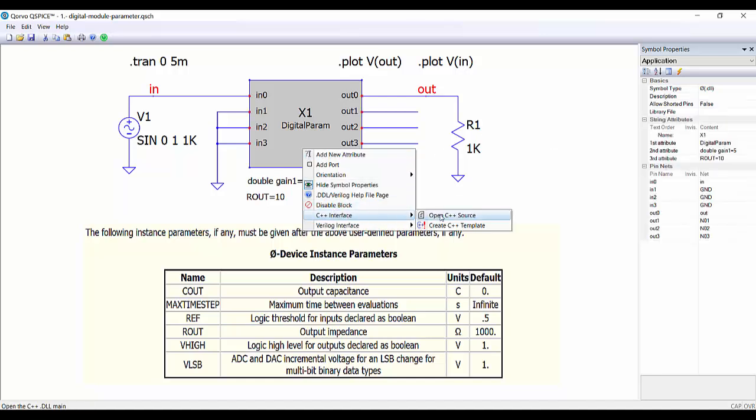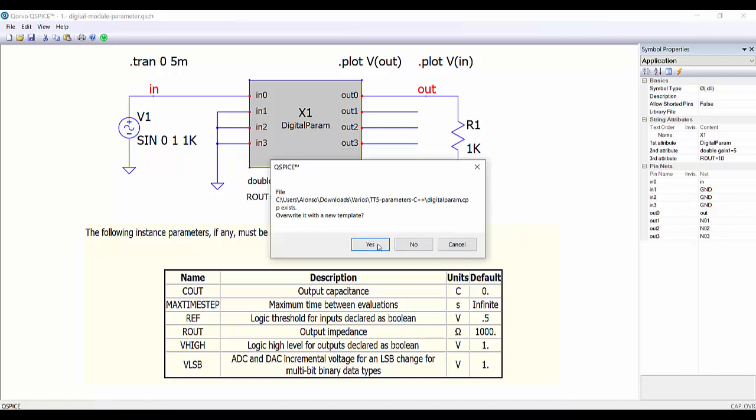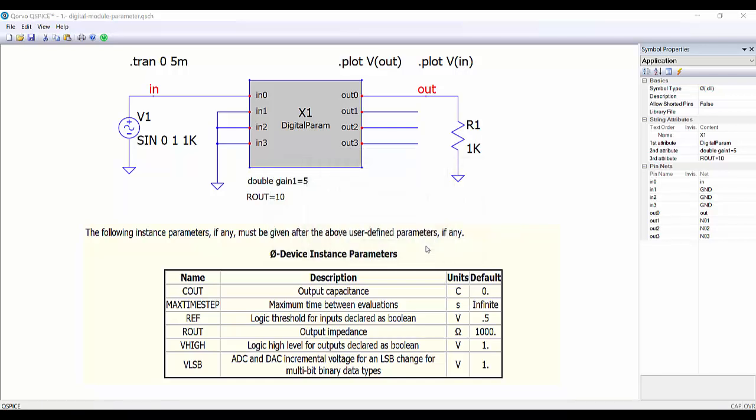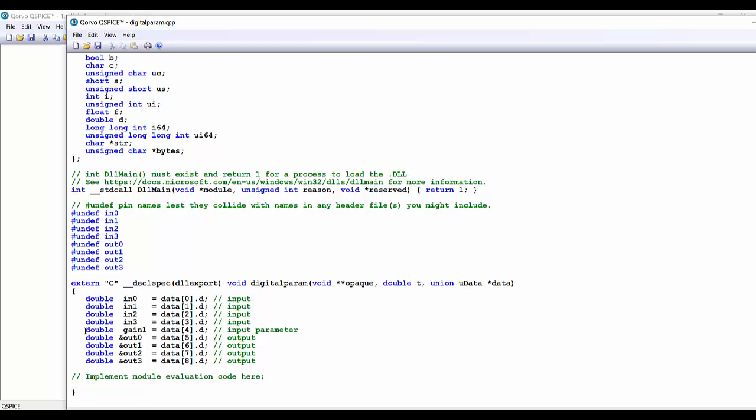Here, so we say yes, okay. And we can see that we have this line with the definition of an input parameter for our module. So now we can go to our code and say out0 equal to gain1 times in0.